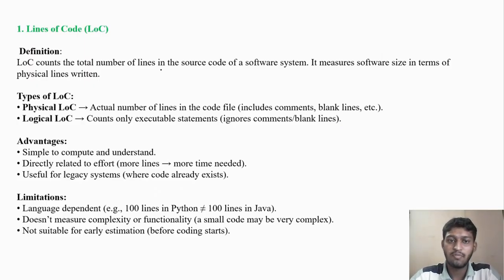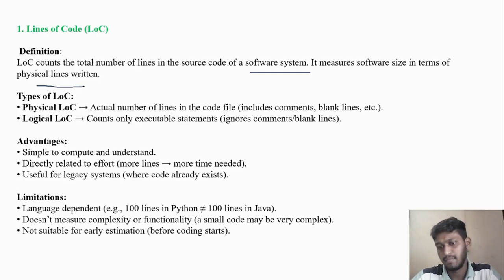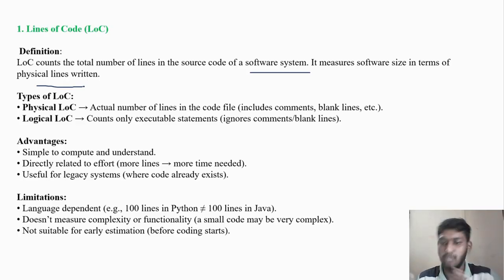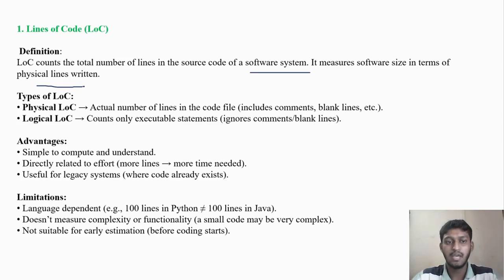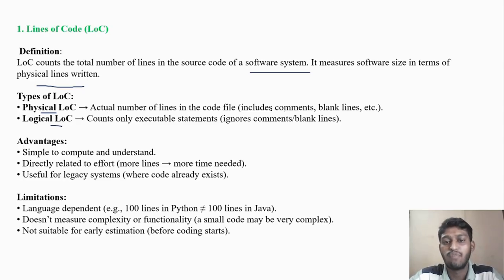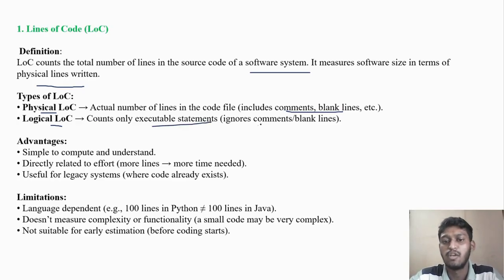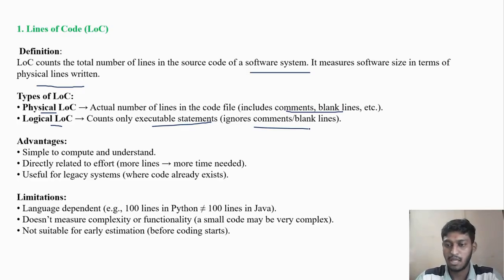LOC counts the total number of lines in the source code of the software system. It measures software size in terms of physical lines written. On the basis of line count, we determine effort, number of employees, cost, and time. There are two types: physical line of code, which includes all actual lines including comments and blank lines; and logical line of code, which counts only executable statements, ignoring comments and blank lines.